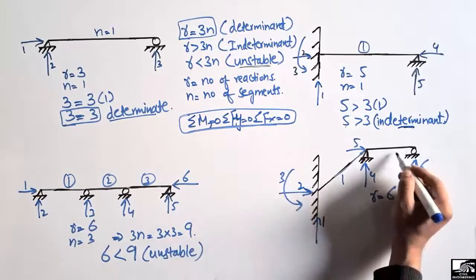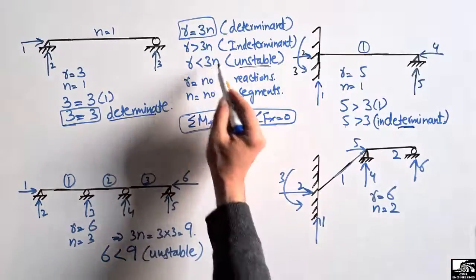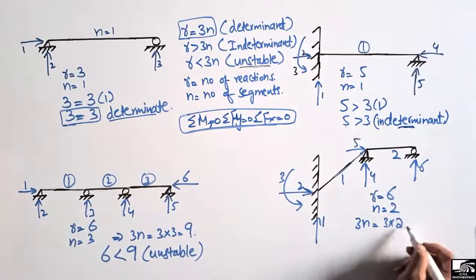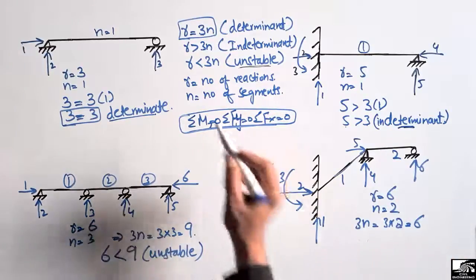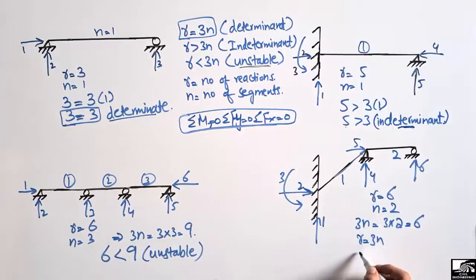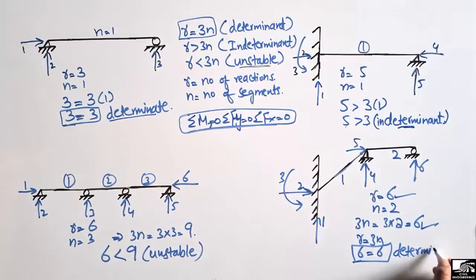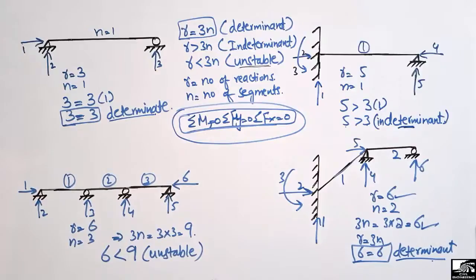The number of segments for this beam is two, so n equals 2. Then 3n equals 3 times 2, which is 6. Since R equals 6 and 3n equals 6, R equals 3n — so this beam is a determinant beam. We can easily find the support reactions using the equilibrium equations.